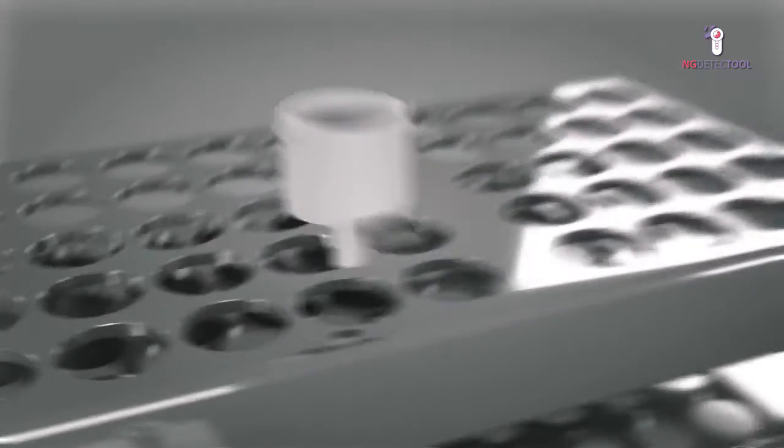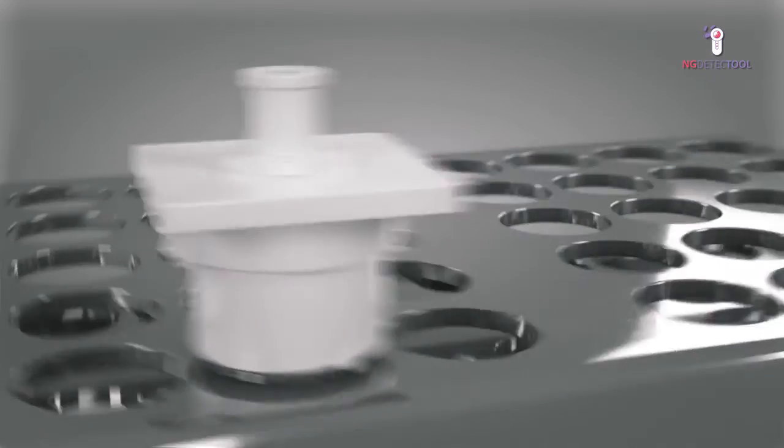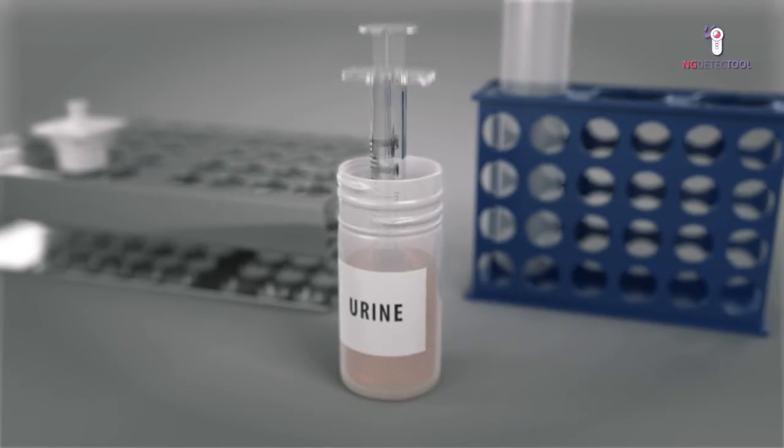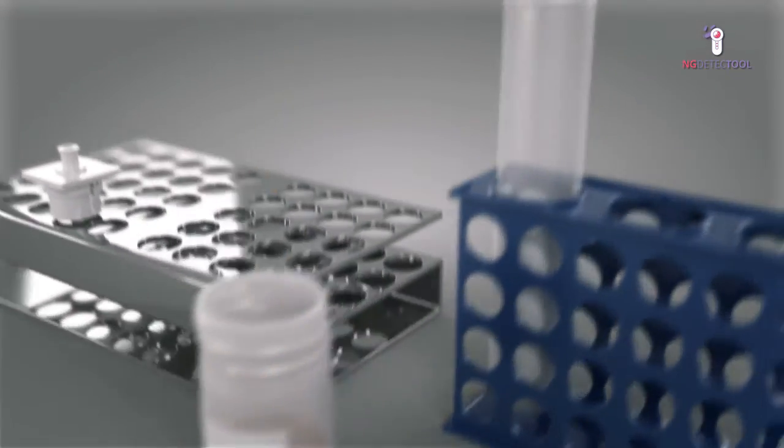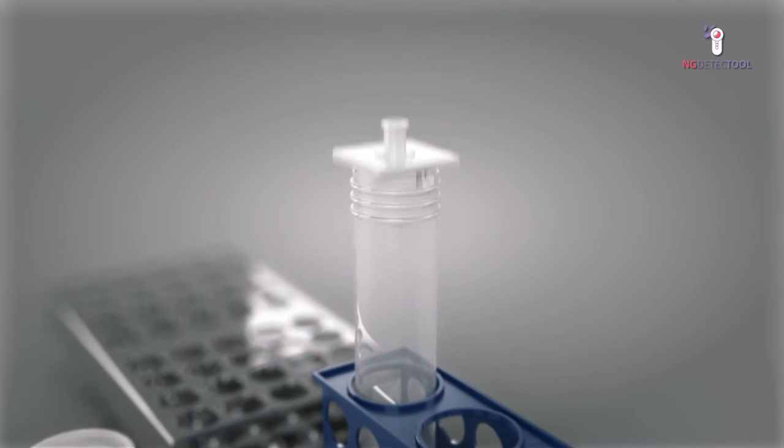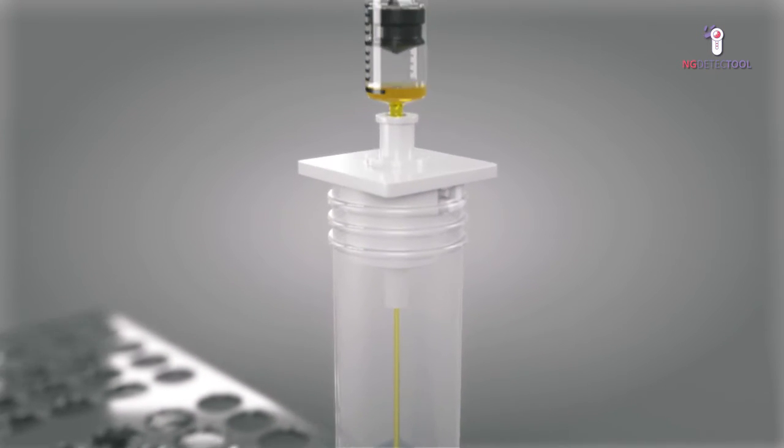In this case, insert the cup into the lower part of the device and close the filtration system with the upper part. Aspirate 5 milliliters of the liquid and some air using a syringe and push the sample through the filter until bubbles appear.